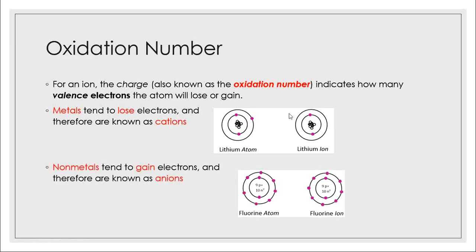Non-metals tend to gain electrons and therefore are known as anions. Because non-metals already have a lot of valence electrons, they want to gain more. For example, a fluorine atom already has seven valence electrons, so it just wants to gain one more. As an ion, it now has eight total valence electrons.